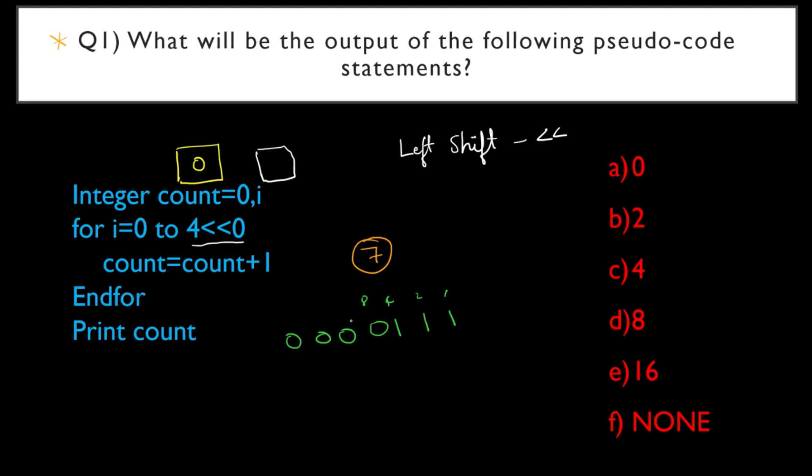Now what happens when I left shift 7 by 2 places? I am moving each of these bits left two times. When I move all these bits left one time, the resulting number will be this. This is one time. When I move the bits left the second time, the resulting number will be this. The resulting number will be 16 plus 8 plus 4, that is 28. So 7 left shifted 2 times is 28.